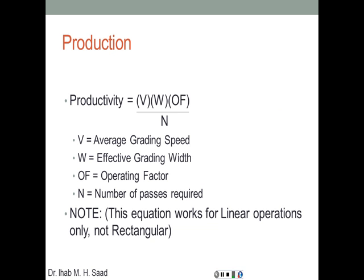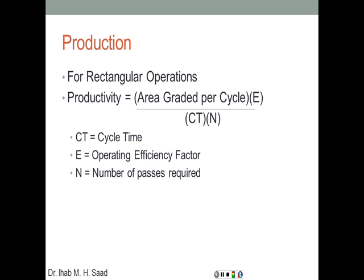For linear operations, productivity equals V times W times OF divided by N, where V is the average grading speed moving forward, W is the effective grading width, OF (or E) is the operating efficiency factor, and N is the number of passes required. This equation applies only to linear operations, not rectangular.